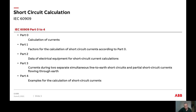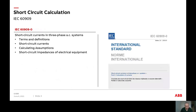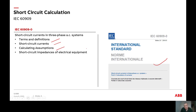Today the main focus will be on short circuit current and some of the parameters we need to take note of. In IEC 60909 Part 0, this covers short circuit currents in three-phase AC systems. The standard covers things like terms and definitions, short circuit currents, and calculating assumptions. Assumptions are very important because many factors affect the short circuit current.